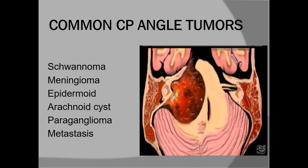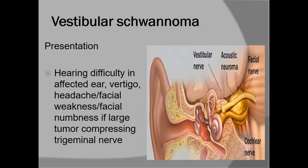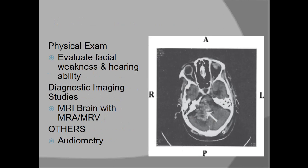Now we talk about common CP angle — cerebellopontine angle — tumors. Schwannomas are the most common CP angle tumors. Others include meningioma, epidermoid, arachnoid cyst, and other tumors. The vestibular schwannoma usually presents with hearing loss, vertigo, headache, or weakness of the facial nerve. On physical examination, hearing loss, balance, and facial weakness can be confirmed. Diagnosis is made with MRI, and in cases of hearing loss, audiometry is also performed.